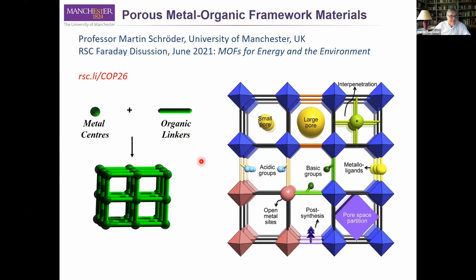On this slide you can see what a metal organic framework looks like. It's a combination of metal centres and organic linkers linked together into a three-dimensional structure which gives you a porous material. This is an extremely important aspect of metal organic frameworks — they're very designable. You can have small pores, larger pores, you can introduce different ligands and metallo ligands inside the pores, basic groups, acidic groups. It gives you enormous chemical variety in terms of open metal sites, and once you make your material you can modify it by post-synthetic means.